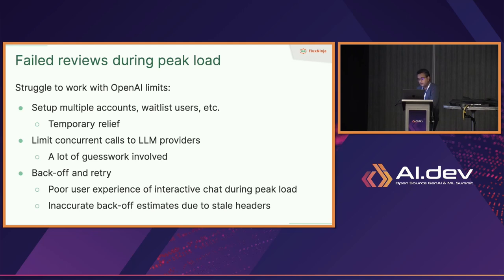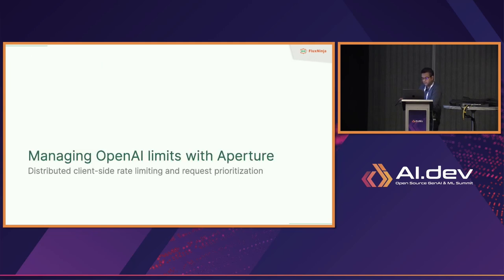Another problem with back-off retry loops is prioritization — not all workloads are equally important. Sometimes you have interactive workloads like real-time chat that you ideally want to prioritize over others, and there's no way to do that in a simple retry model. So they struggled for a while, and we started working with them to solve this problem using an open source project called Aperture. The cool idea was client-side rate limiting with request prioritization — tracking external rate limits on the client side and working backwards to schedule workloads, like a scheduler for OpenAI APIs.